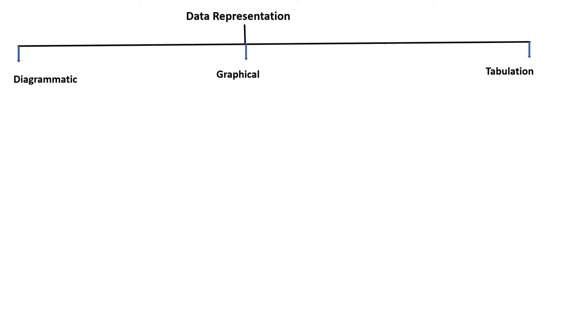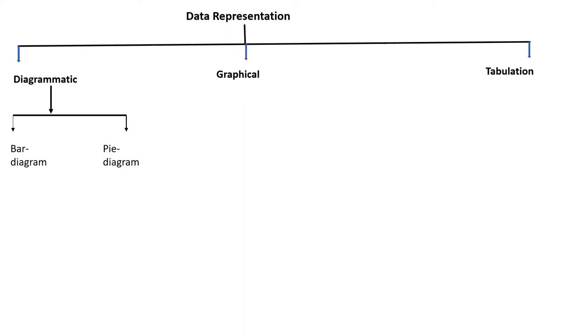Data representation. In earlier standards, that is 8th and 7th, you have done this chapter on statistics and you have worked with some data representations like forming tables using the data and plotting graphs using the data. Now, data presentation is of three types: diagrammatic, graphical, and tabulation method. In the diagrammatic method, we can use a bar diagram or a pie diagram. This pie diagram you will learn in your 10th standard.